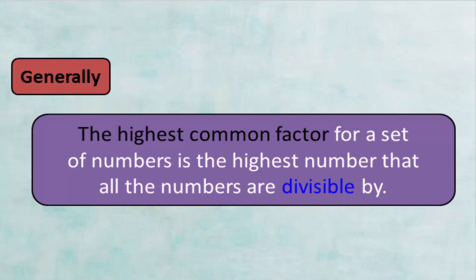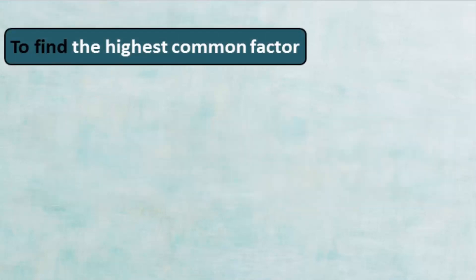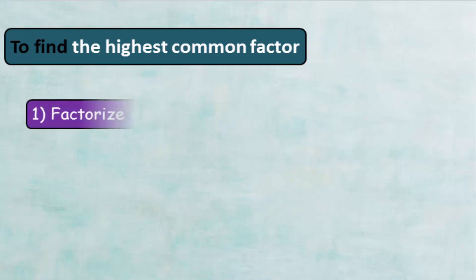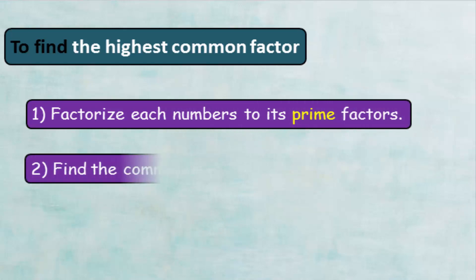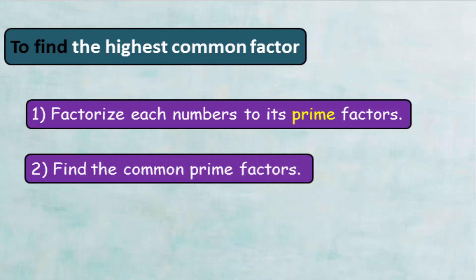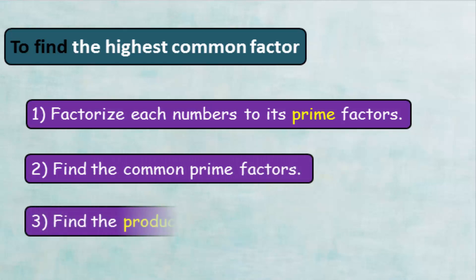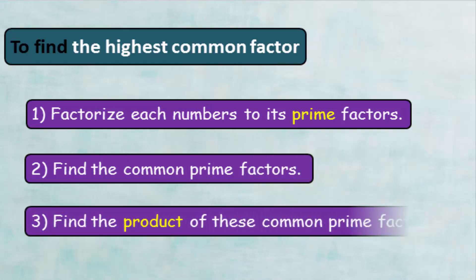Now, let's see how to find the highest common factor of two or more numbers. To find the highest common factor, follow these steps. First, factorize each number to its prime factors. Second, find the common prime factors. Third, find the product of these common prime factors to get the HCF.